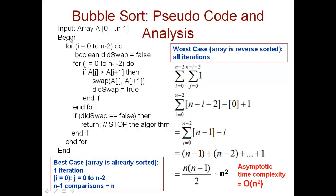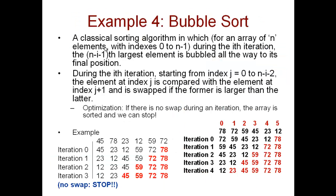That is what is here in the pseudo code: for i equals 0 to n minus 2. The loop index i corresponds to the iteration number. Then in each iteration, we do the pairwise comparisons and check if the left side element is greater than the right side element. If the left element is greater than the right element, we do the swap. If the left element is less than or equal to the right element, we do not do the swap.